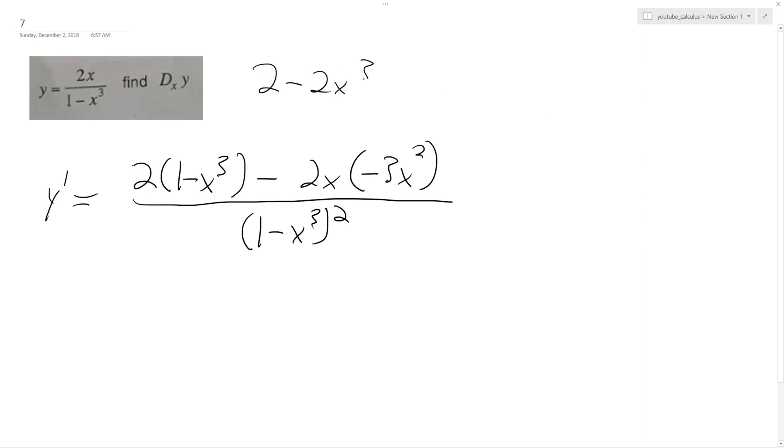So 2 minus 2x cubed plus 6x to the third. Something doesn't seem right here. Oh, no, everything's okay. So this ends up being 4x to the third plus 2.